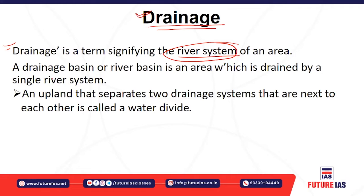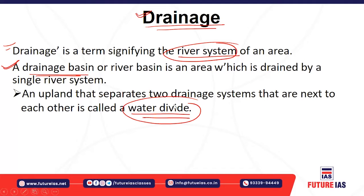The drainage basin is the basin which is drained by a single river system. For example, the Ganga and its tributaries drain a particular area — that area is called the drainage basin of the Ganga River system. There is also the term water divide, which refers to the separation of two drainage systems. The divide that separates two river systems is generally an upland, because only uplands can separate drainage systems; otherwise, they would merge together.